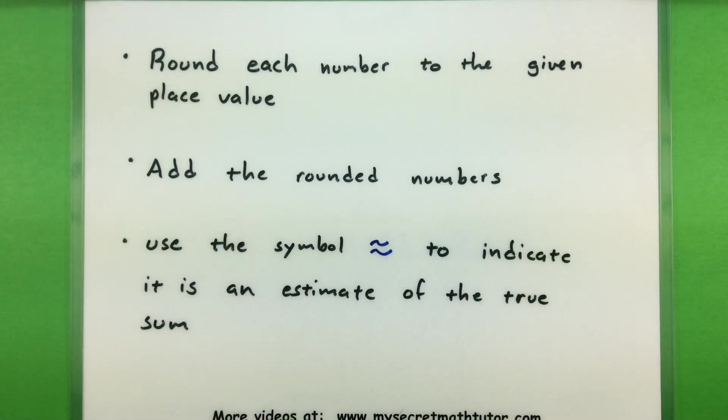Once you have that then you can add the rounded numbers to one another. This is a pretty simple process because after you are done rounding things usually you just have lots of zeros in the number and you just have those largest place values that you'll actually be adding. Once you are done make sure that you use the approximate symbol, that's these two wavy lines here, to indicate that your answer is really an estimate of the true sum you're getting out.